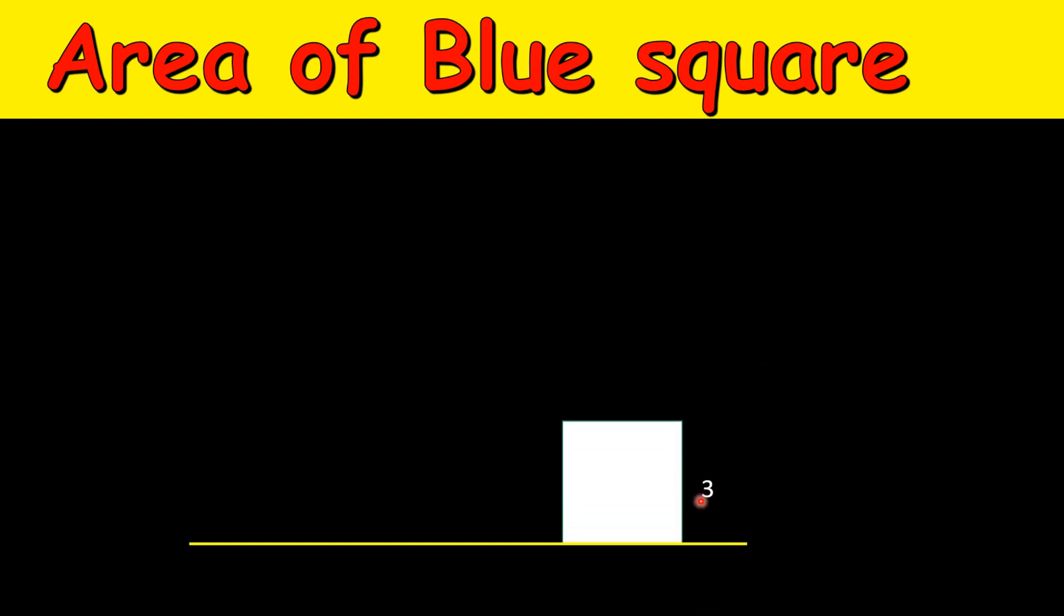Then we have another square whose each side is of length 2, and this side is overlapping, so this is shifted to the right and these sides overlap. We have another square whose each side is of length 1, but this square is placed in the middle.